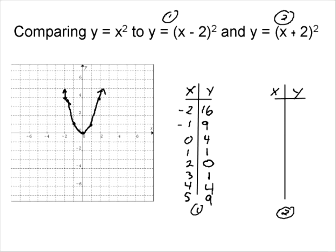Same thing for equation 2. This time negative 2, negative 1, 0, 1, 2. Negative 2 plus 2 is 0 squared, we get 0. Negative 1 plus 2 is 1 squared, we get 1.